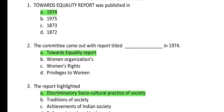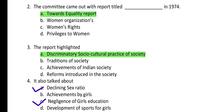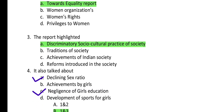Question 1: Towards Equality Report was published in which year? The answer is 1974. Question 2: The committee came out with the report titled DASH in 1974 — it is the Towards Equality Report. Question 3: The report highlighted a discriminatory socio-cultural practice of society. A is the correct answer for question number 3.